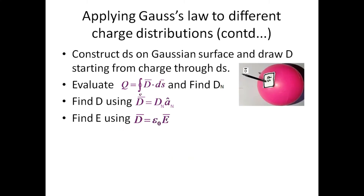The third step is to take a small differential area ds over the Gaussian surface, and a D vector is constructed starting from the charge distribution and passing through ds. The fourth step is to evaluate the charge enclosed within the Gaussian surface using q equal to the integral of D vector dot ds vector. From this, we can find the value of Dn. After finding Dn, we find D vector using D vector equals Dn times an, where an is the unit normal vector, always perpendicular to ds.